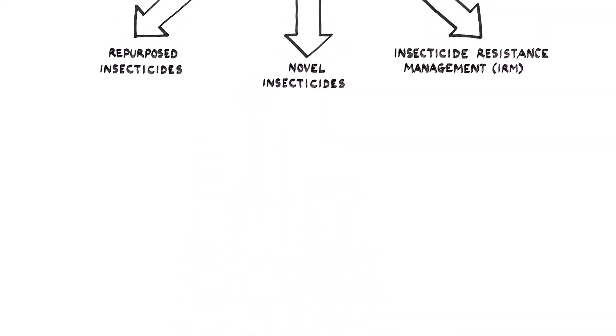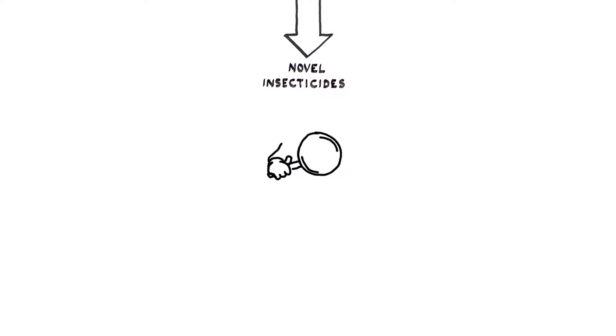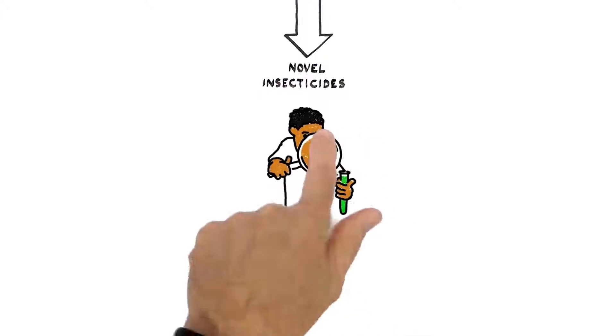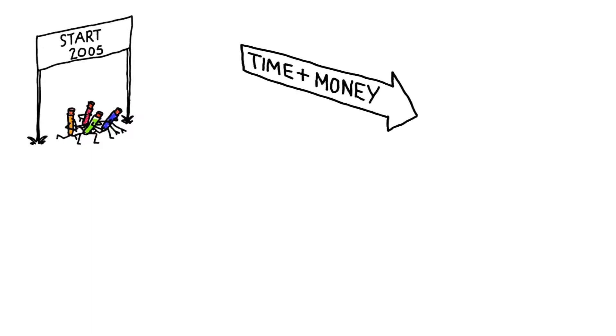For sustained vector control and malaria eradication, the answer lies in the discovery and selection of brand new insecticides that have never been used before. At IVCC, we've been working towards this goal since 2005.